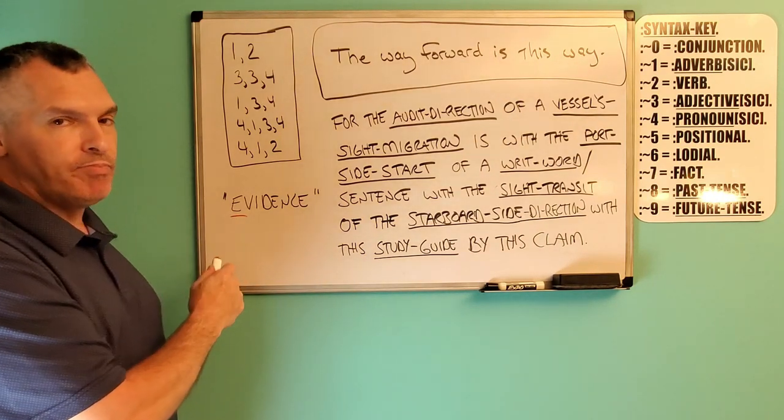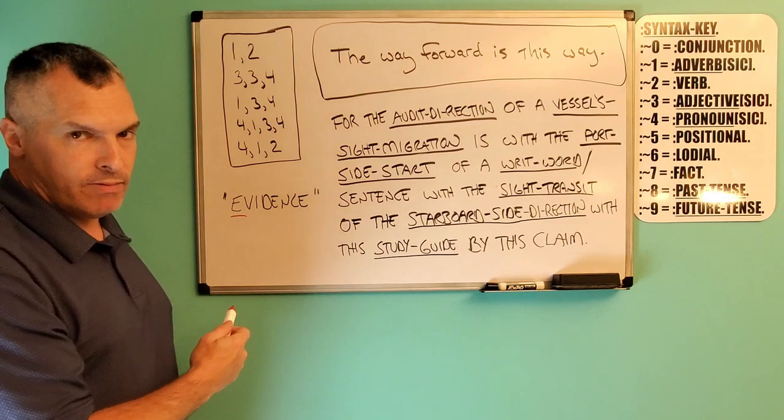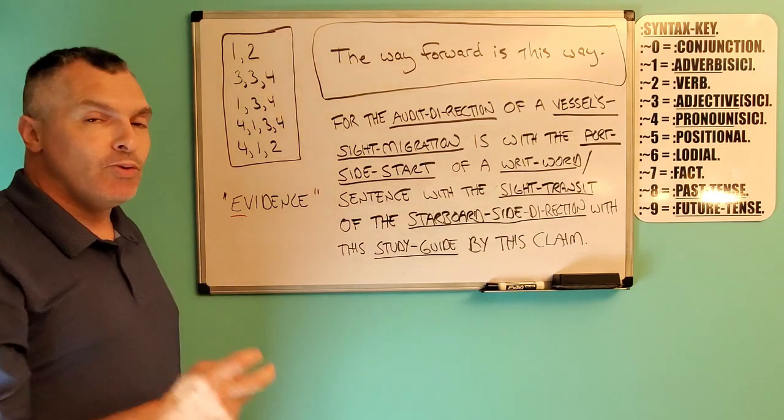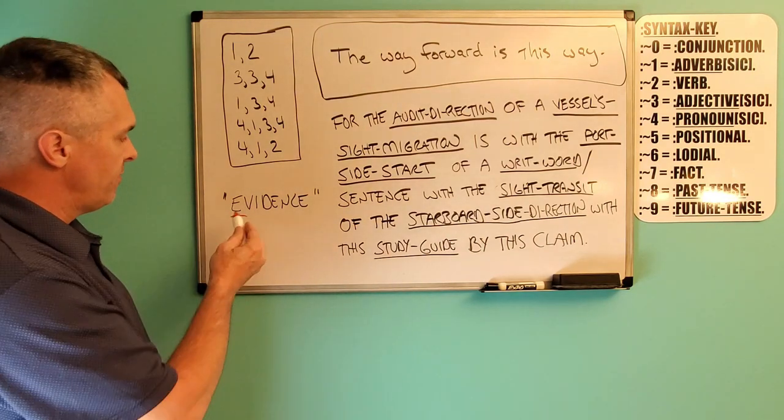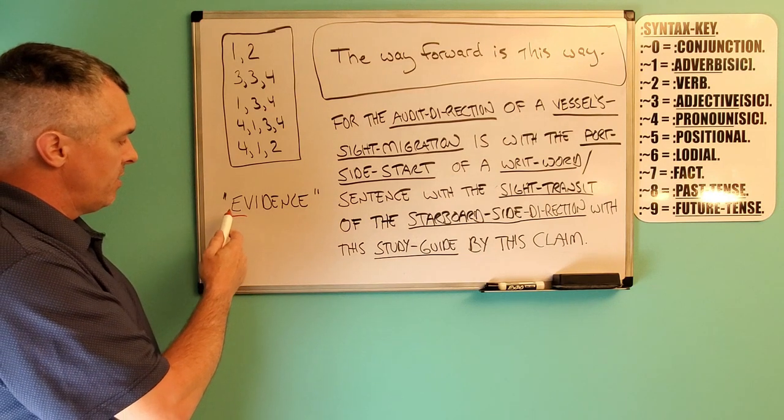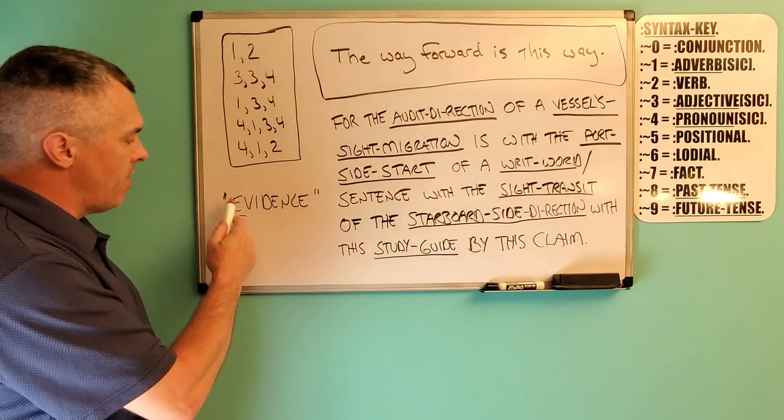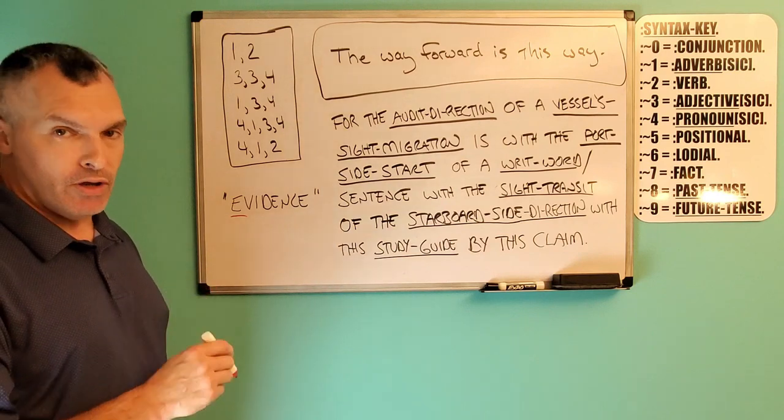Because E comes before V. E precedes V. A vowel in front of a consonant means no.